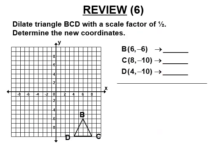Now we're dilating triangle BCD with a scale factor of one half — that means we multiply all coordinates by one half. B prime should be at three, negative three. C prime should be at four, negative five. D prime should be at two, negative five. We get a triangle half as big and half the way closer to the origin.